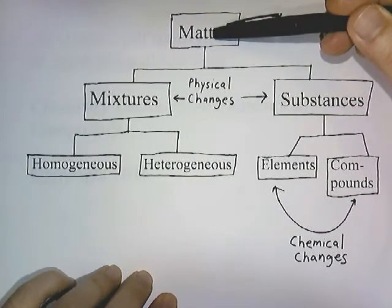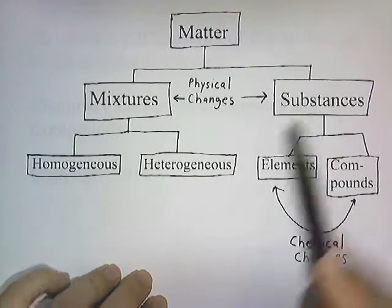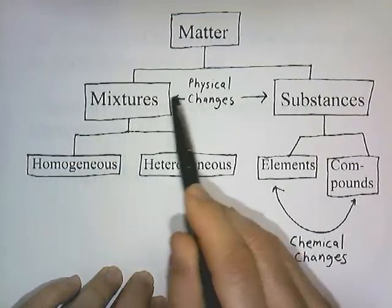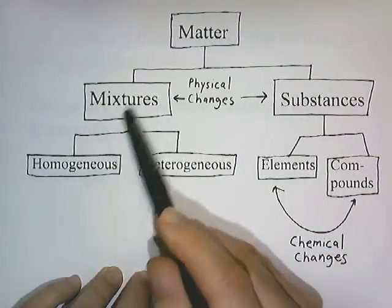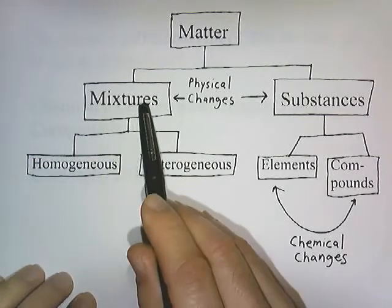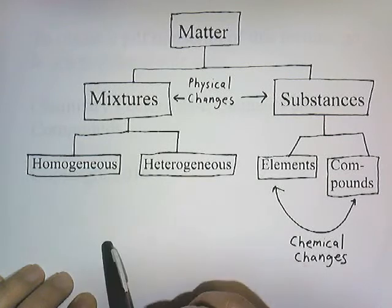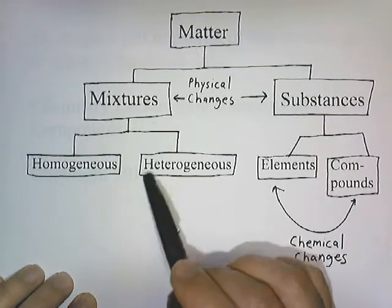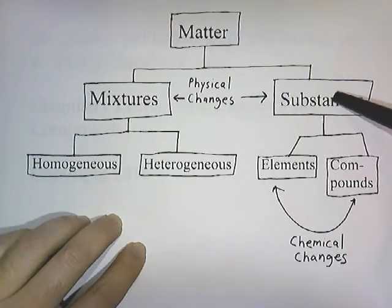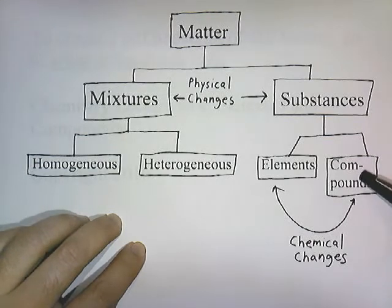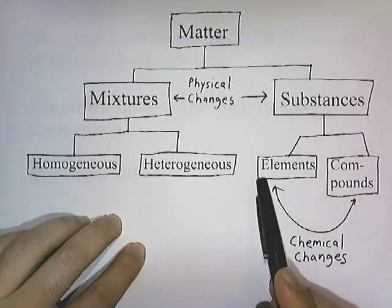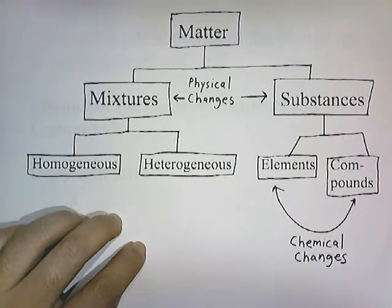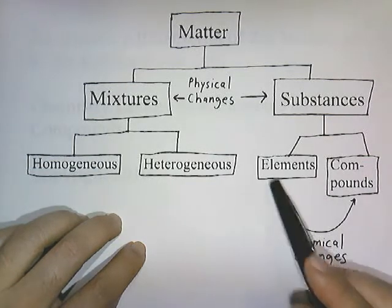Here we have matter, and matter falls into two categories: mixtures and substances. Mixtures are made when you take substances and physically blend them together, and they are easily separated into substances through physical changes — moderate heating, filtering. Mixtures can be divided into homogeneous mixtures and heterogeneous mixtures, which is basically just appearance: homogeneous mixtures have one phase, while a heterogeneous mixture has two or more phases and you can see different sections in it. Substances fall into two categories — elements and compounds. Compounds are made out of elements, and if you take elements and fuse them together you can make compounds. The only way to turn compounds into their component elements or fuse elements into compounds is through chemical changes.